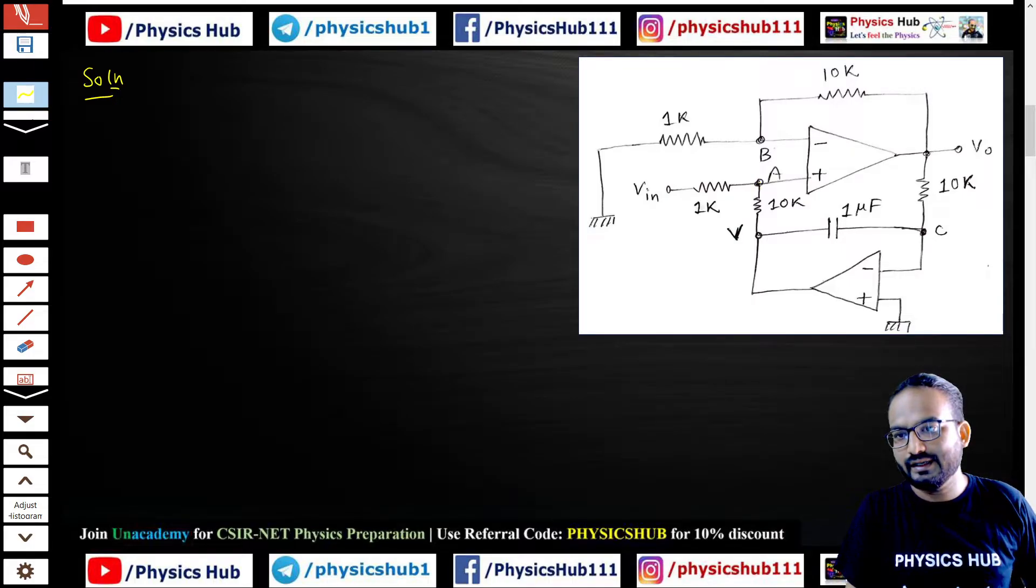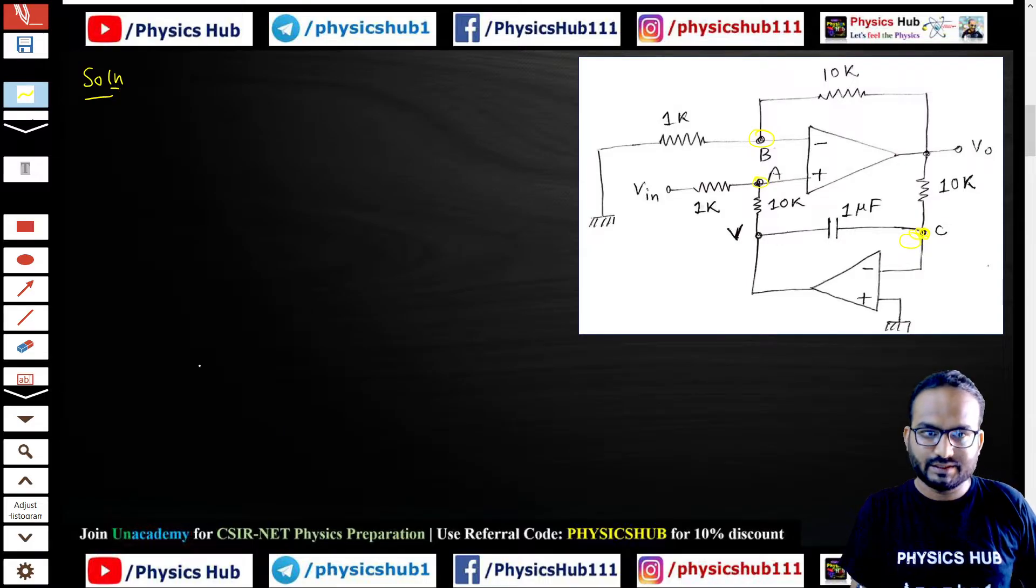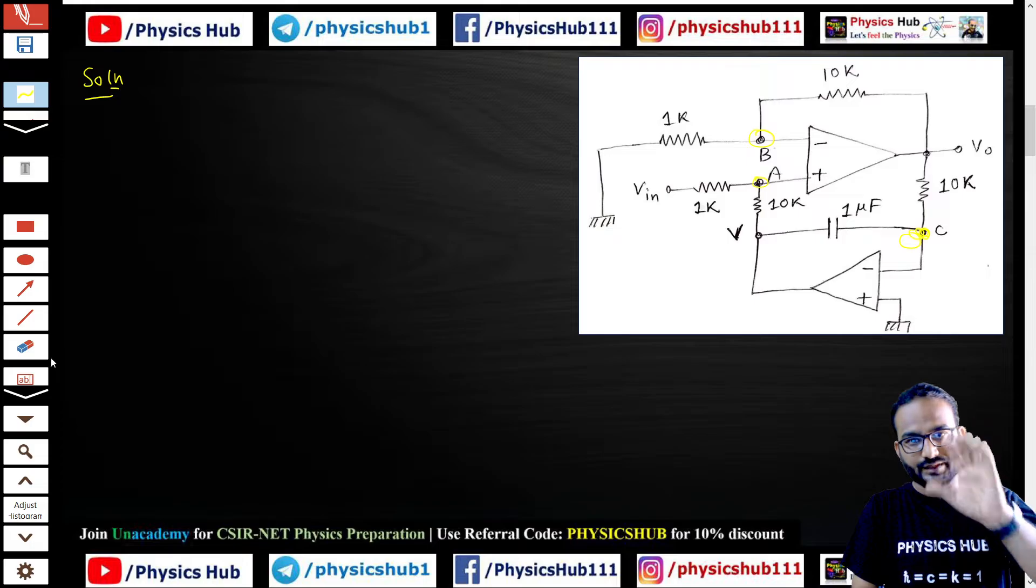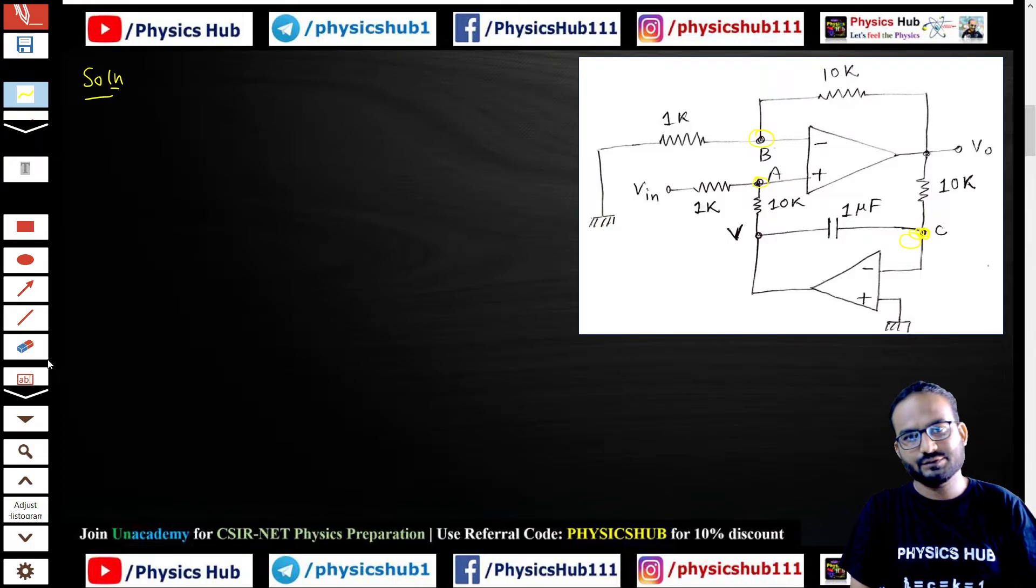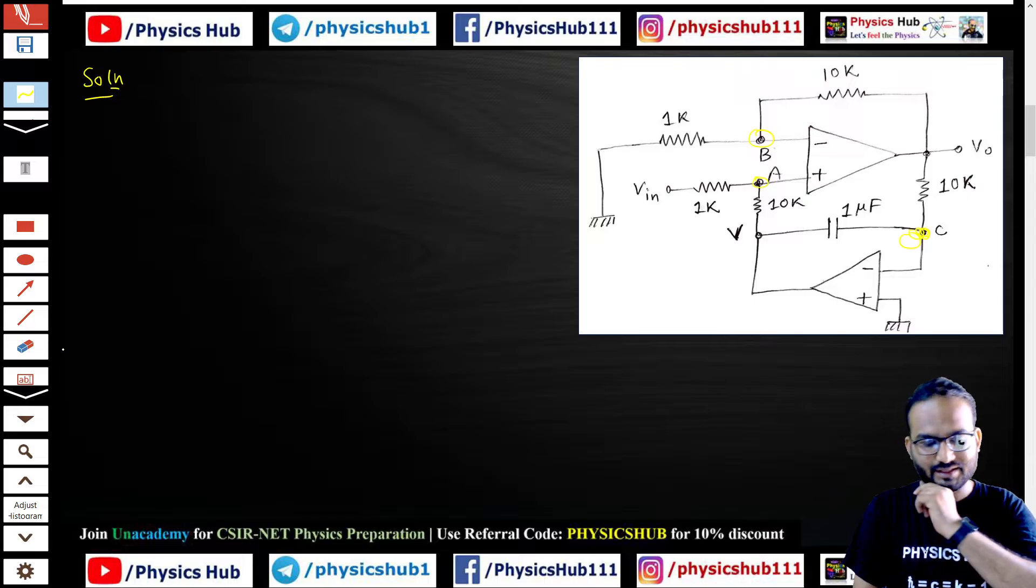Here I have shown you three nodes: node A, node B, and node C. We're going to utilize KCL and find out the gain V_0 by V_in. From the gain expression we can determine whether it is a low pass filter or a high pass filter. Three nodes we have: A, B, and C.